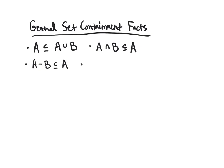Another useful rule is transitivity: if A is contained in B and B is contained in C, then A is contained in C. This almost needs no comment — everything in A is in B and everything in B is in C, so everything in A is in C.